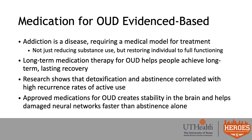Because addiction is a disease, it requires a medical model for treatment — not just reducing substance use, but an overall restoration of that individual to full functioning. Long-term medication therapy for OUD helps people achieve long-term lasting recovery. Research has shown over and over that detox and abstinence are correlated with high recurrence rates of active use. Approved medications for OUD help with this process because they create stability in the brain and help those damaged neural networks heal faster than abstinence alone.